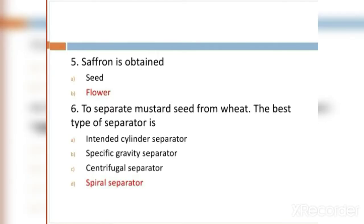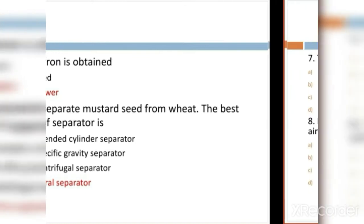MCQ 6: To separate mustard seed from wheat, the best type of separator is: Option A: indented cylinder separator. Option B: specific gravity separator. Option C: centrifugal separator. Option D: spiral separator. The right answer is spiral separator.